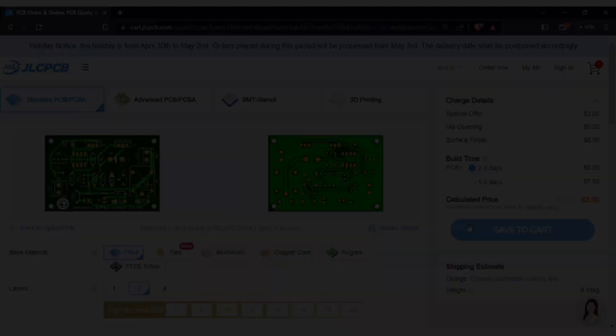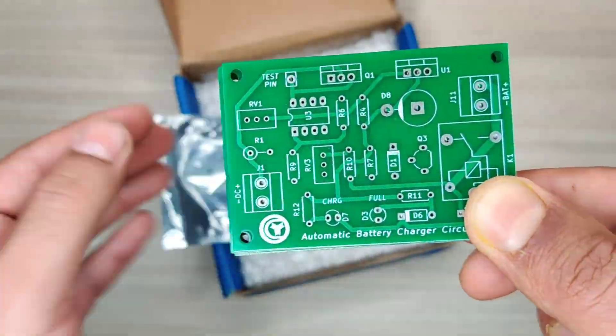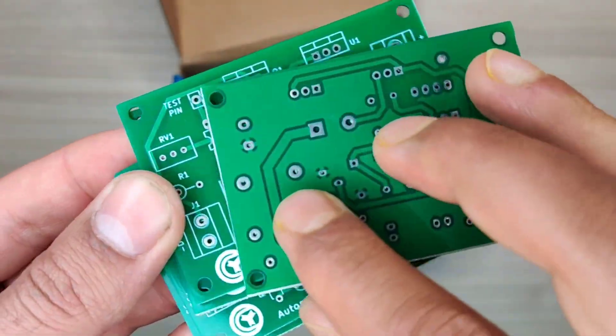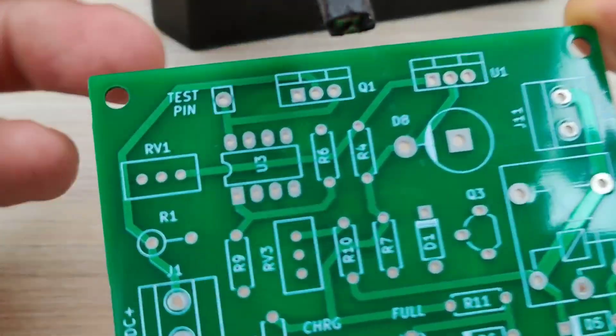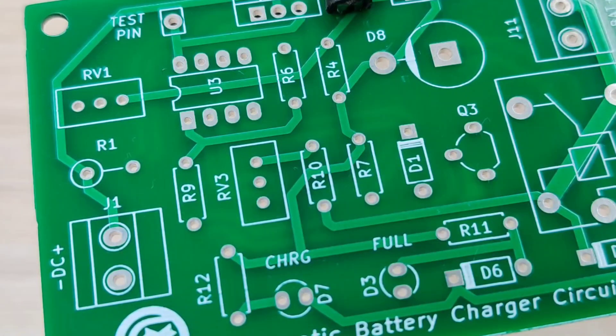Within some days I got my order from JLC PCB delivered and the quality of the PCBs is amazing, five pieces for just two dollars. And now it is time to assemble the PCB, so let's place all the components on the PCB according to the circuit diagram.